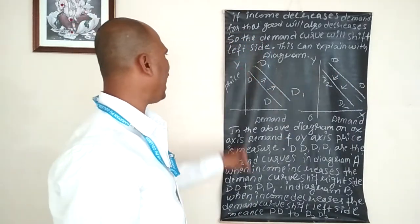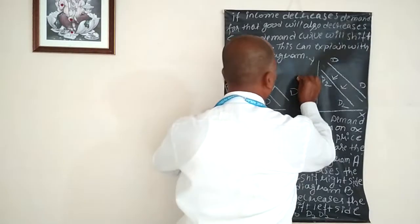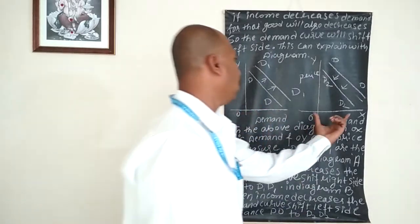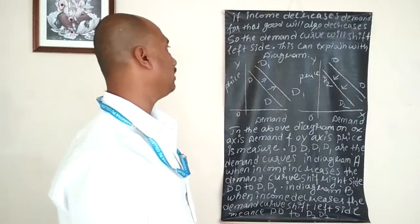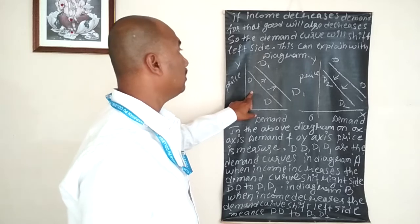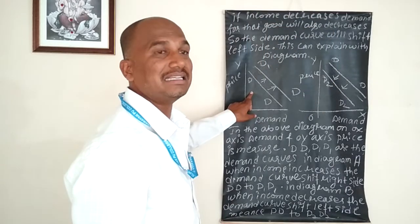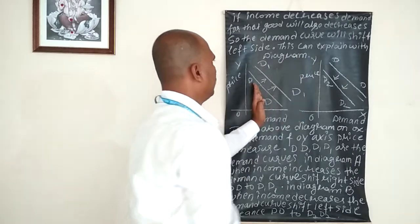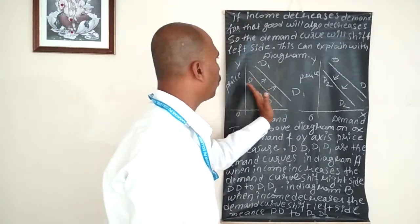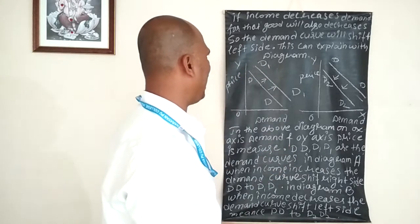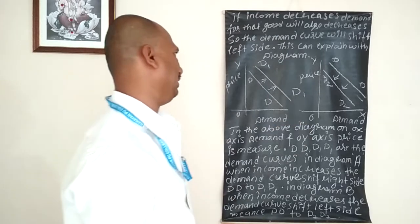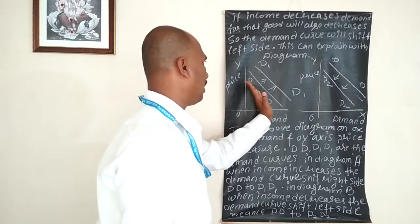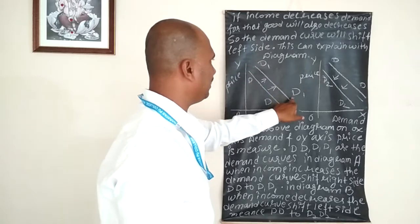In Diagram A: when the income of the consumer increases, the demand curve D shifts from left to right — the arrows move to the right side, creating D1. Income of consumer increases, the demand curve D shifts from left to right and creates D1.